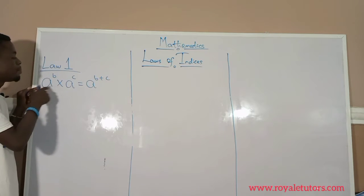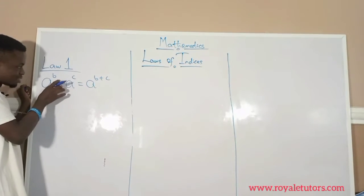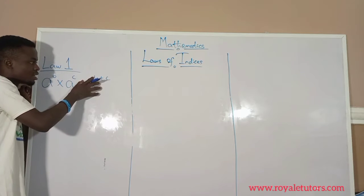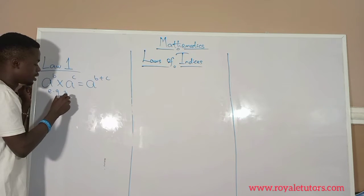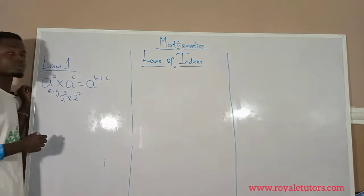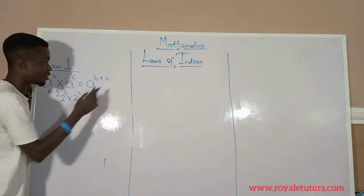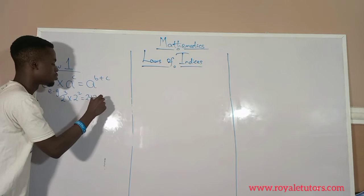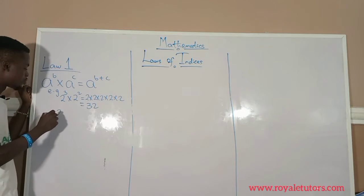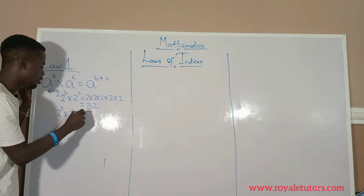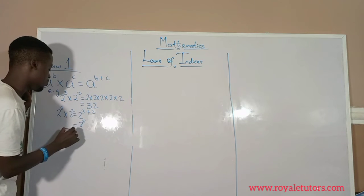So if you have the same base, the powers may be different or the same. When we have the same base and they are multiplying, all you need to do is pick one of the bases, then add the powers together. For example, we have 2 raised to power 3 multiplied by 2 raised to power 2. Using law of indices, that becomes 2 raised to power 3 plus 2, so you pick one base and add the powers to get 2 raised to power 5, which is 32.